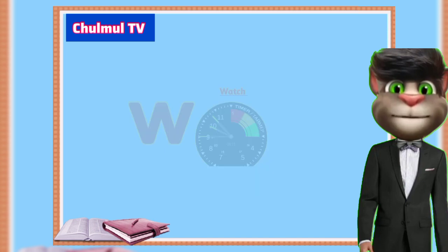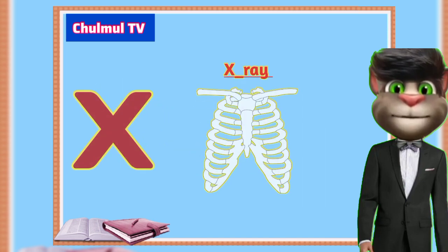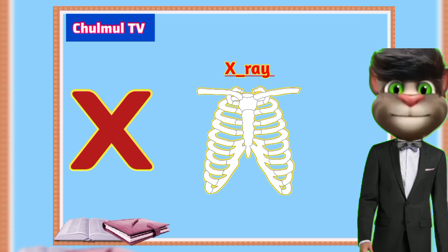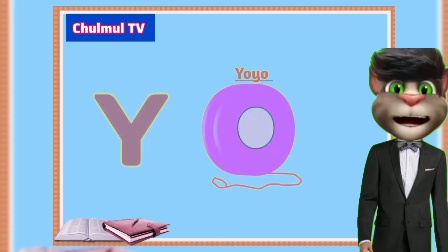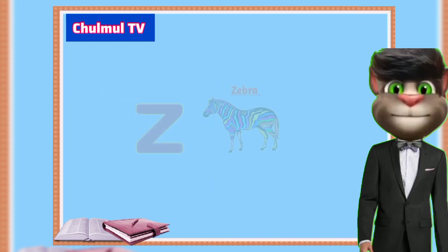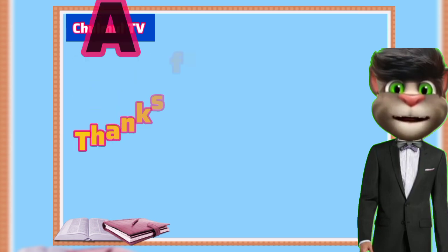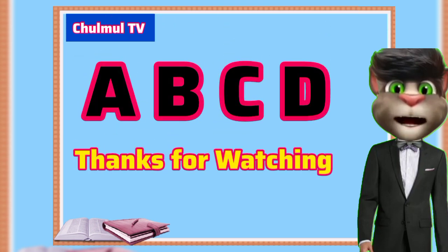V for van, W for watch, X for x-ray, Y for yo-yo, Z for zebra. These are videos of English alphabet.